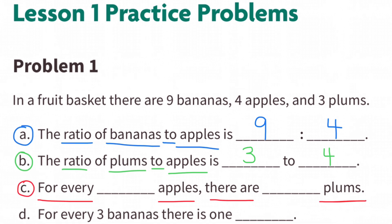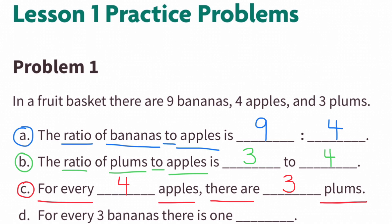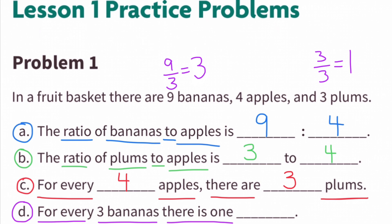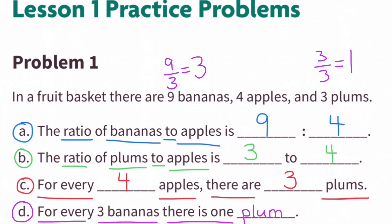Part C: For every blank apples, there are blank plums. For every 4 apples, there are 3 plums. Part D: For every 3 bananas, there is 1 plum. 9 bananas divided by 3 equals 3 bananas, and 3 plums divided by 3 equals 1 plum. So for every 3 bananas, there is 1 plum.